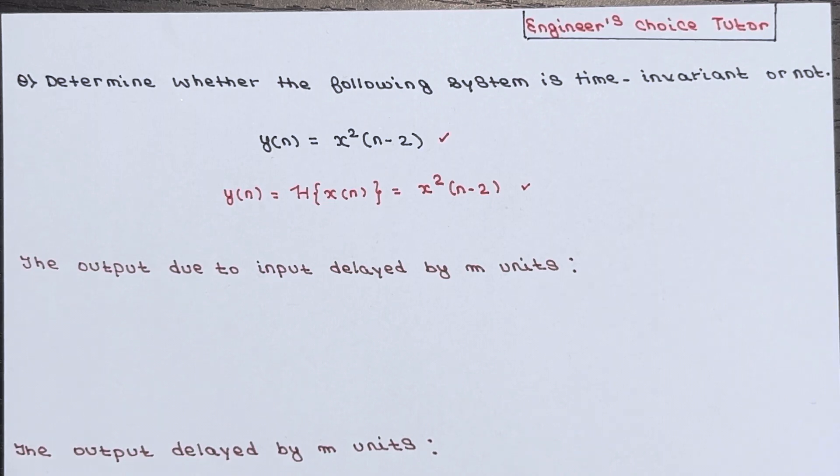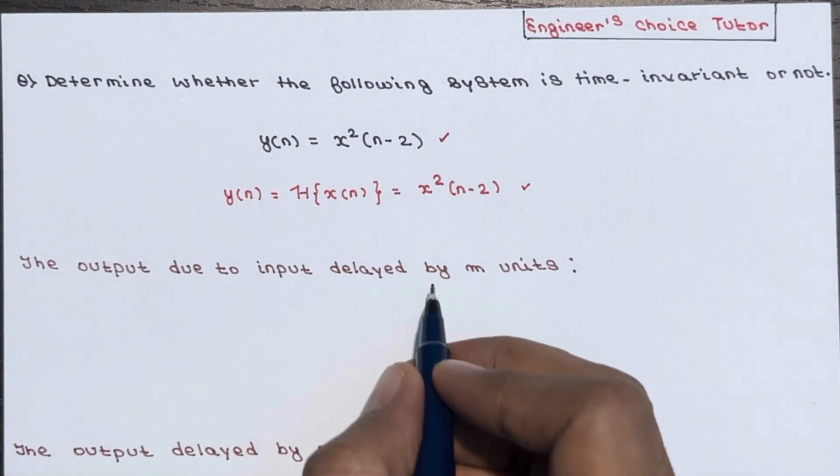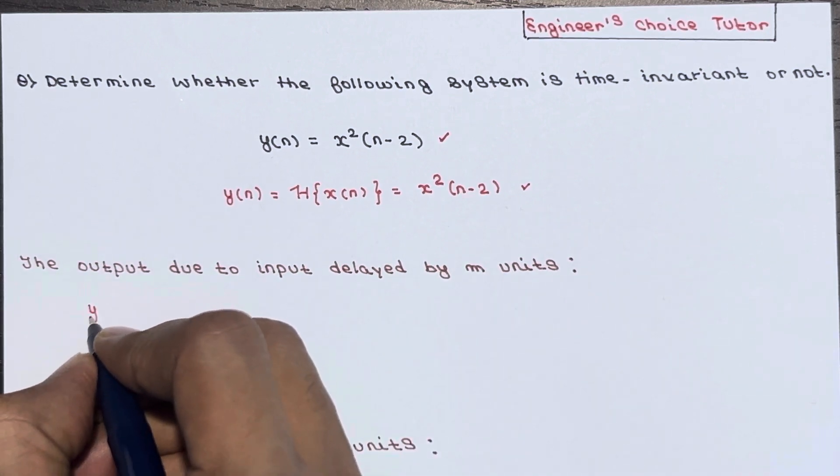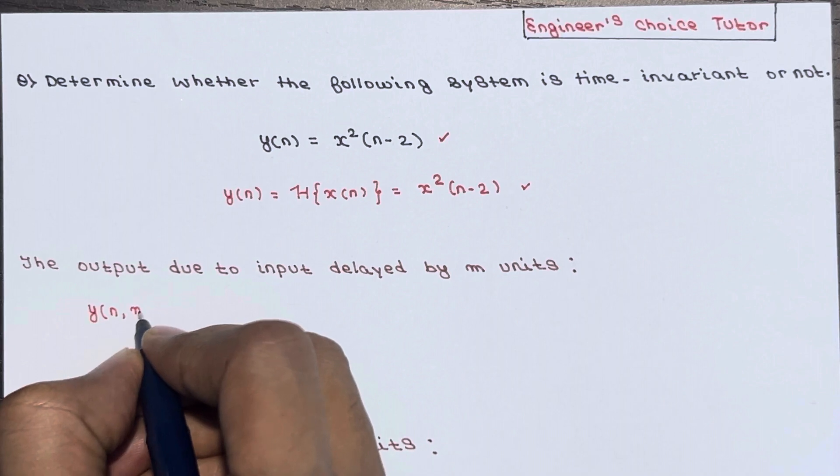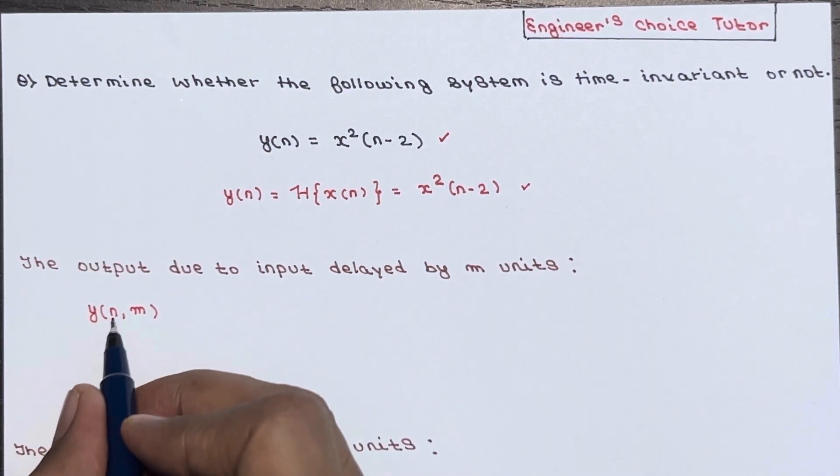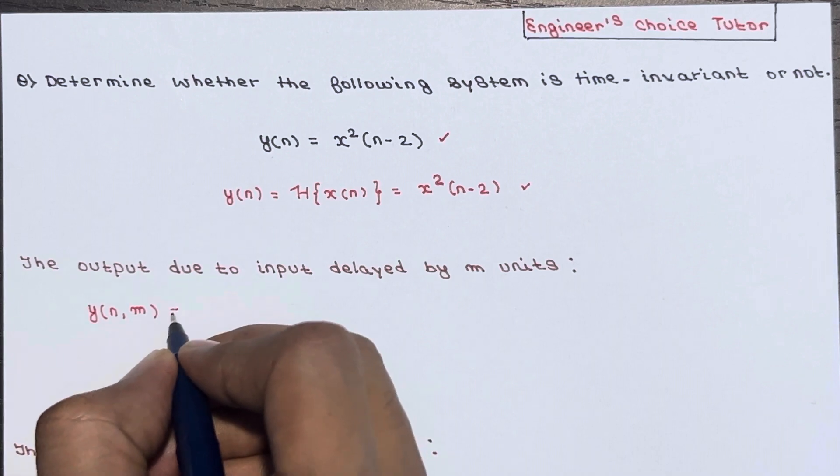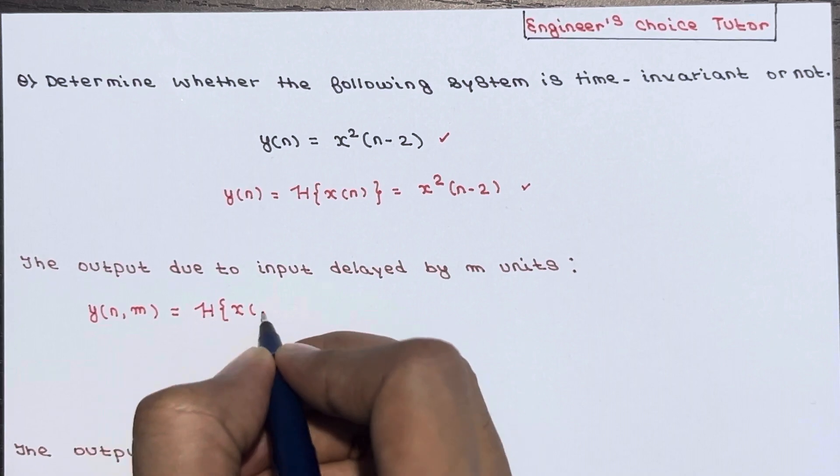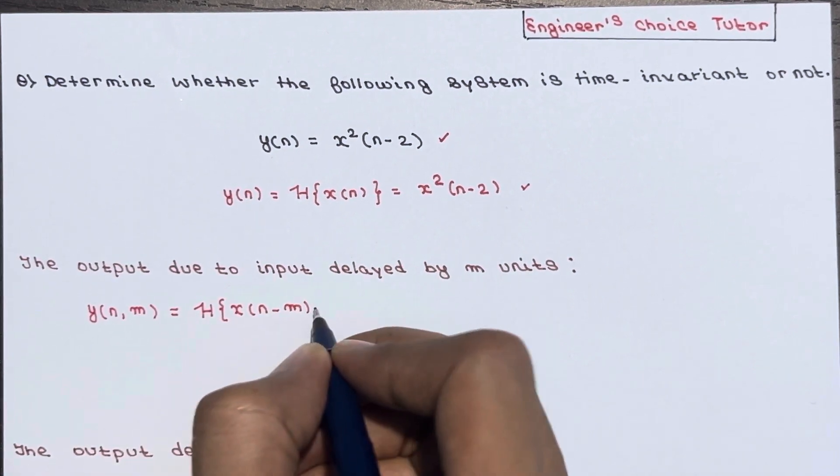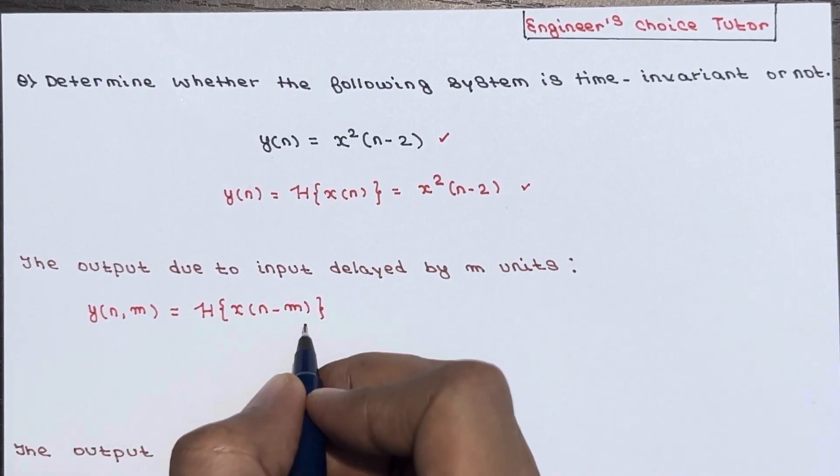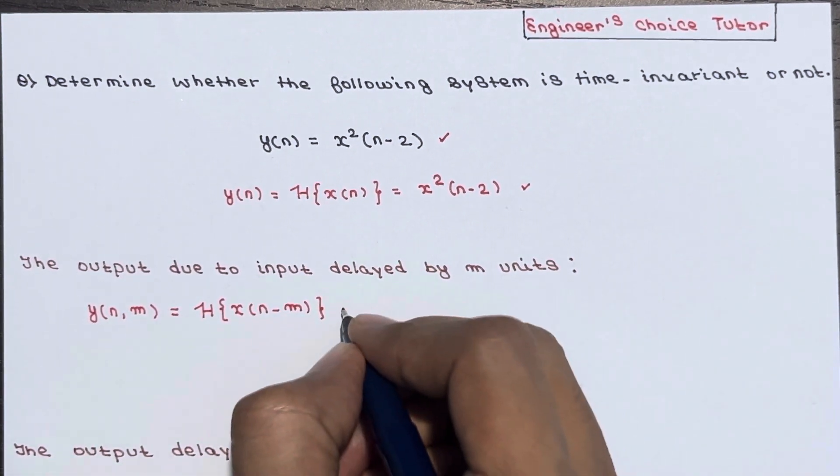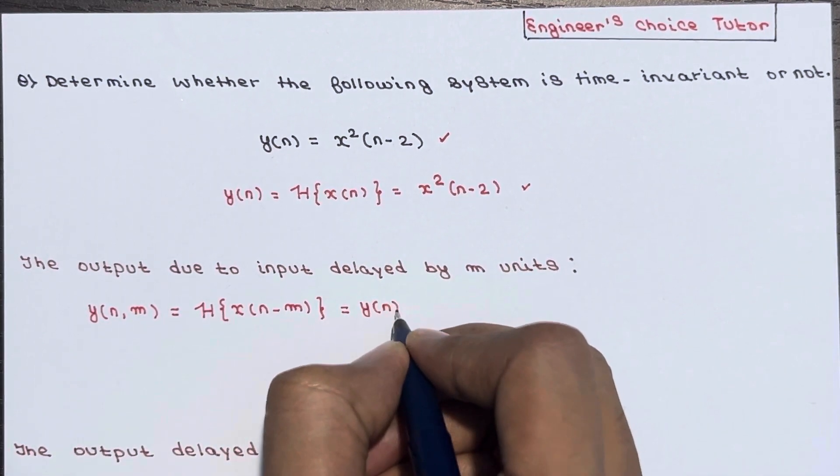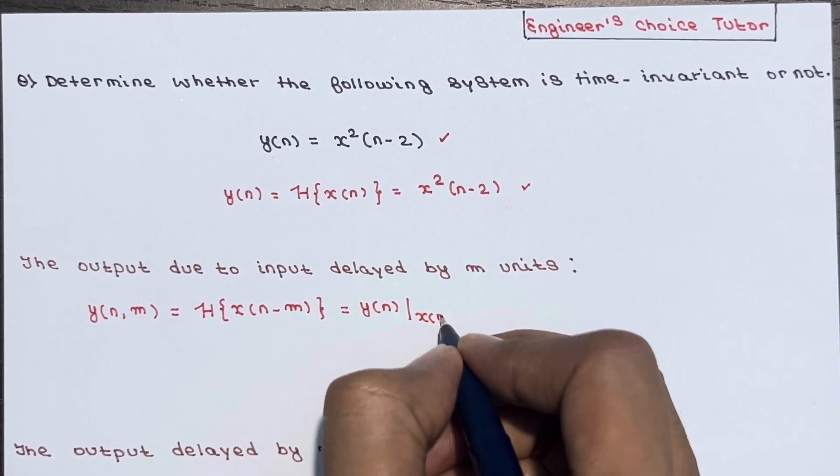For that you have to calculate the output due to input delayed by m units. What do you mean by this? Means you have to calculate y(n,m), which is transform of x(n-m). So basically this is input delayed by m units.